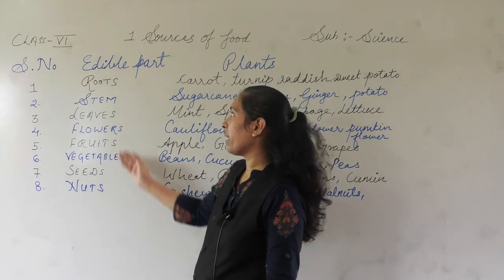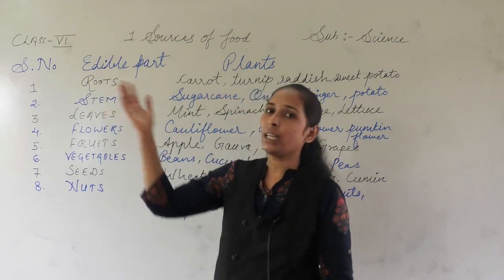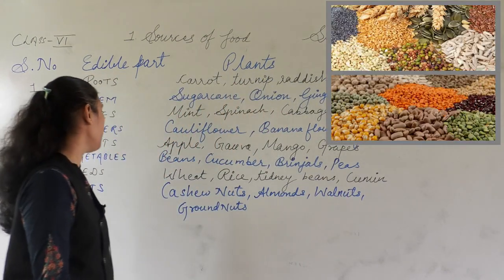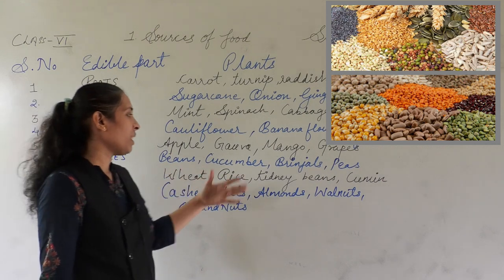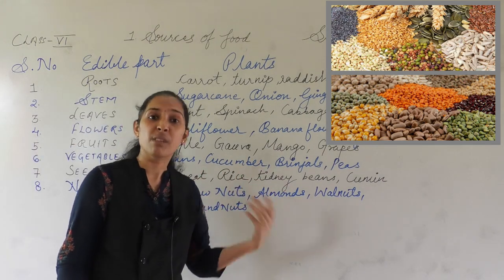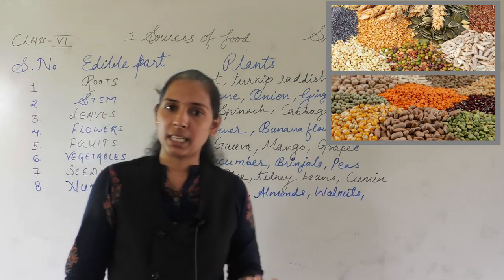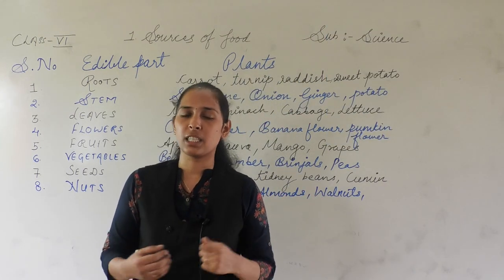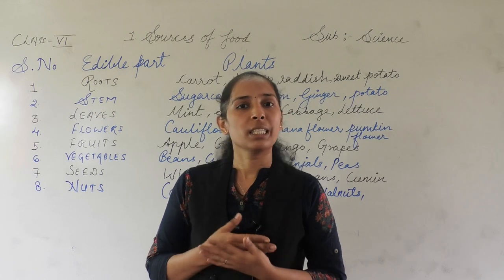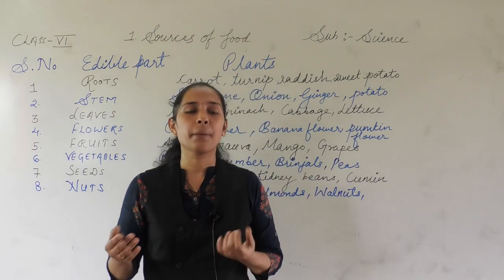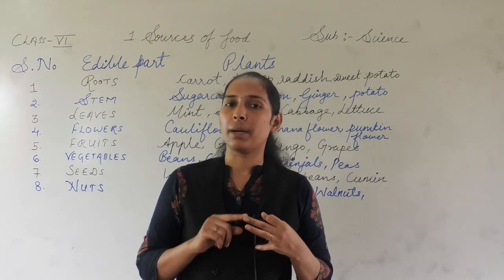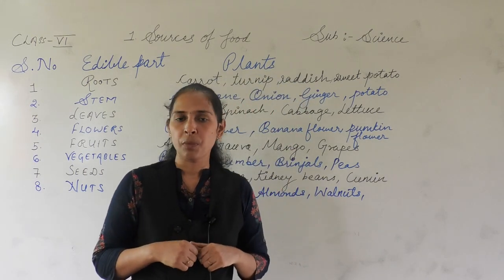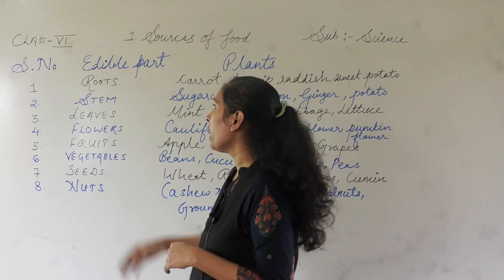Next we will discuss seeds. There are some seeds that we eat, and they are called edible seeds. The edible seeds are rice, kidney beans, cumin, mustard, green peas, and black peas. All the cereal crops like wheat, jowar, bajra, ragi, and maize are also seeds that we eat. That's why they are called edible seeds.